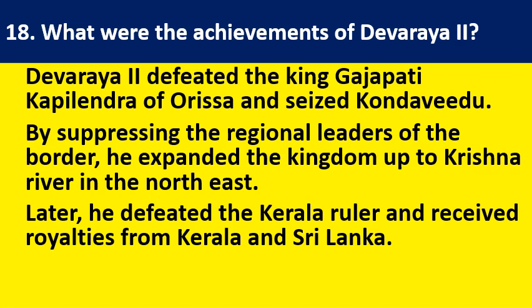Second question: What were the achievements of Devaraya II? Devaraya II defeated the king Gajapati Kapilendra of Odisha and seized Kondavidu by suppressing the regional leaders of the border. He expanded the kingdom up to the Krishna River in the north east. Later he defeated the ruler of Kerala and received royalties from Kerala and even Sri Lanka.